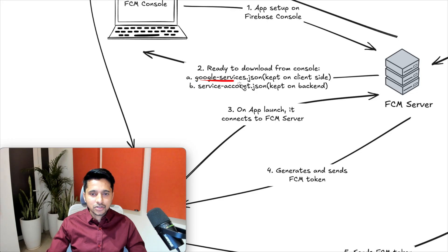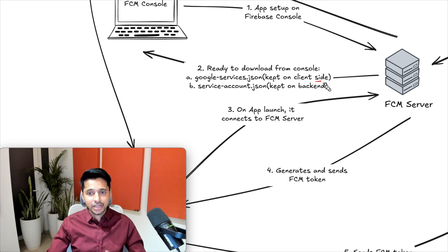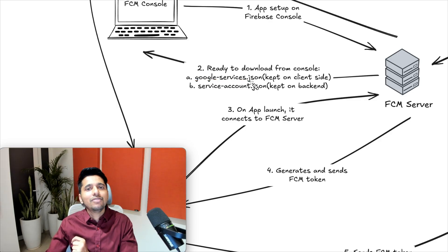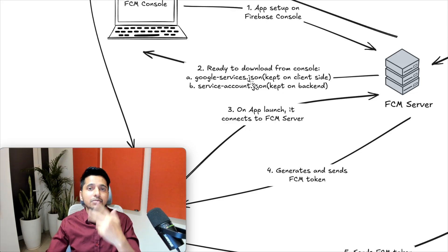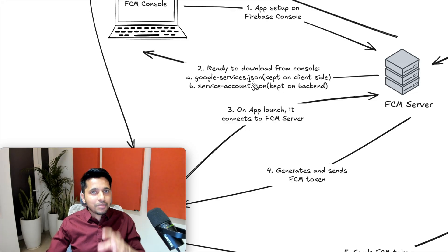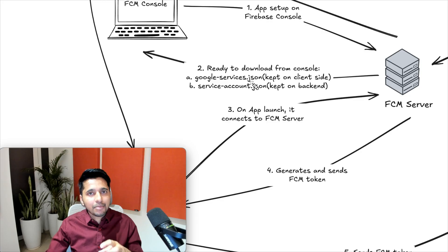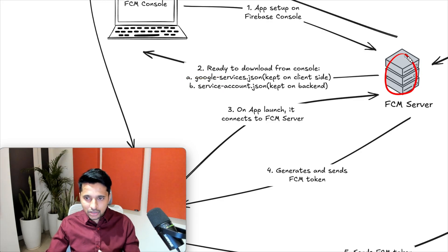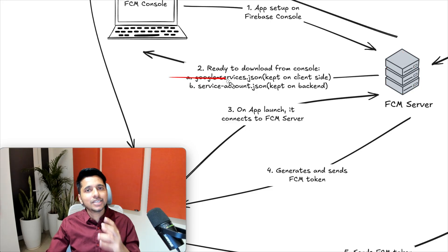Google-services.json is kept on the client side in our Android application project. This JSON file will have all the information needed to connect to the FCM server. So your Android client app will use this file to connect to the FCM server provided by Google.